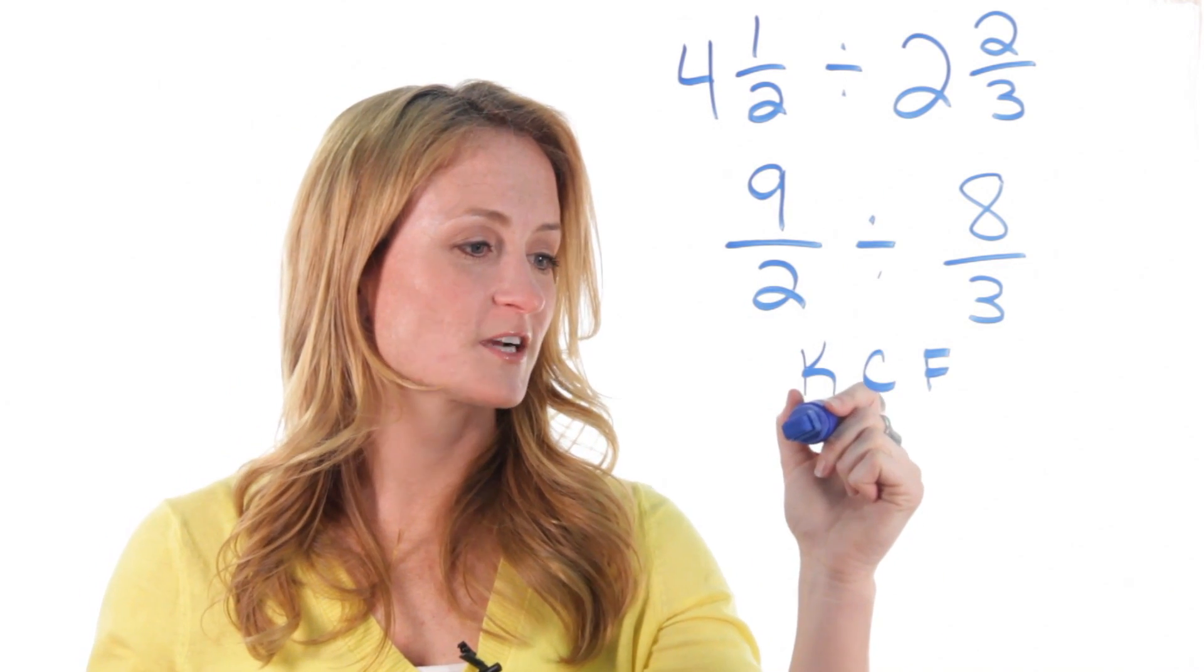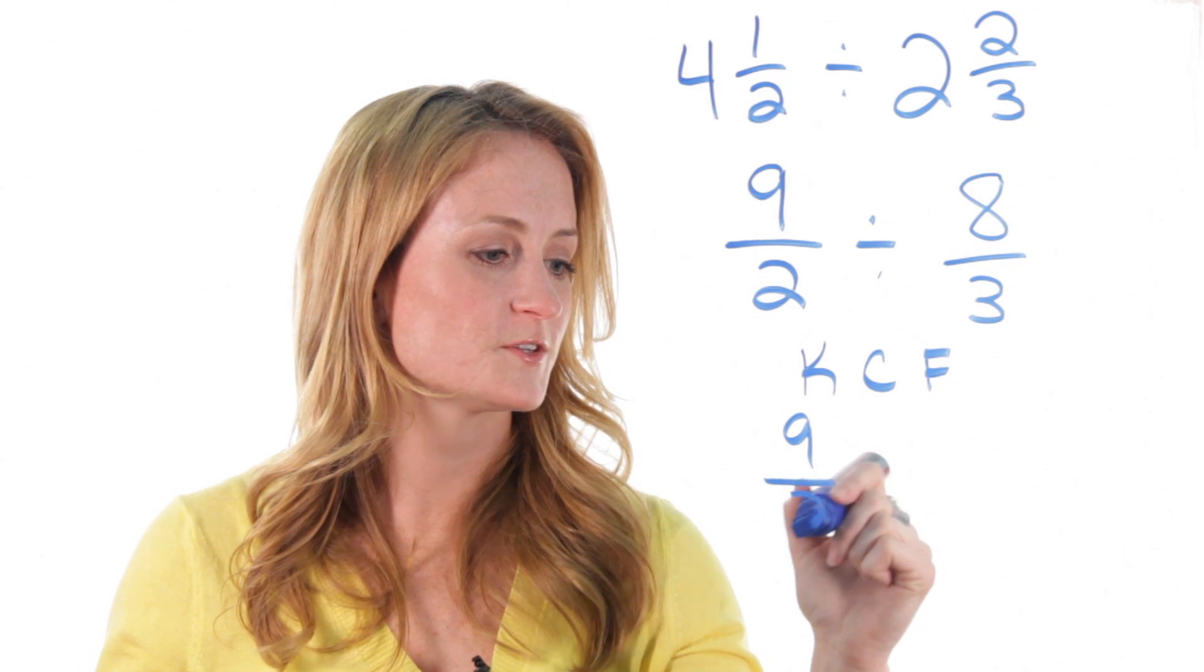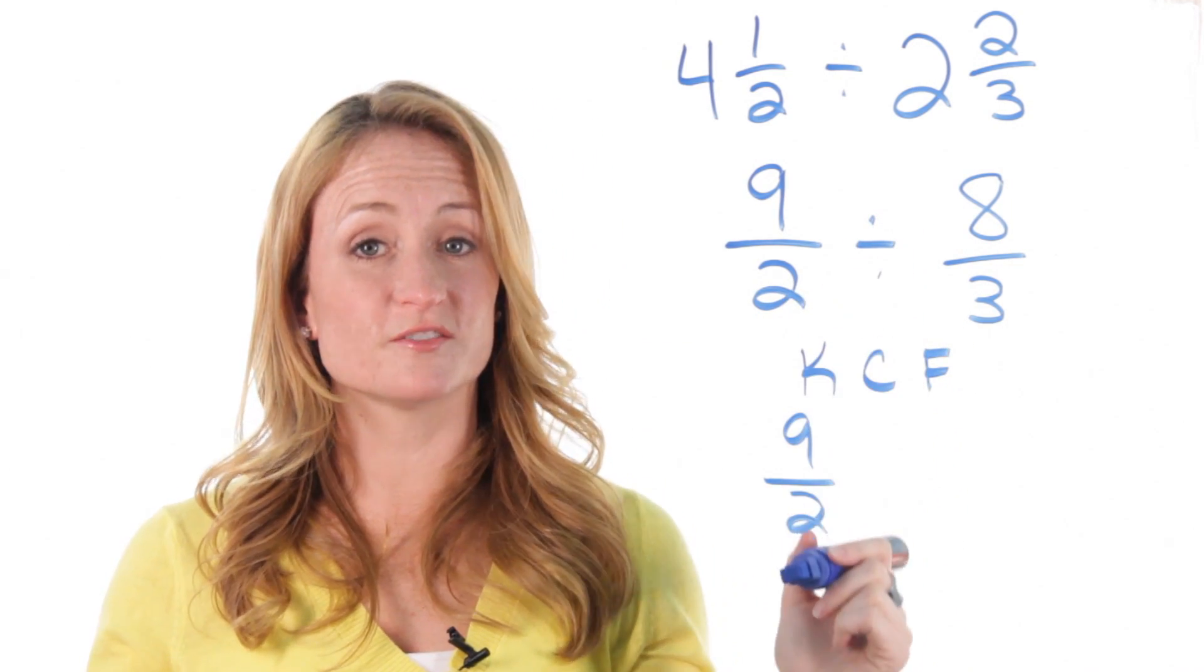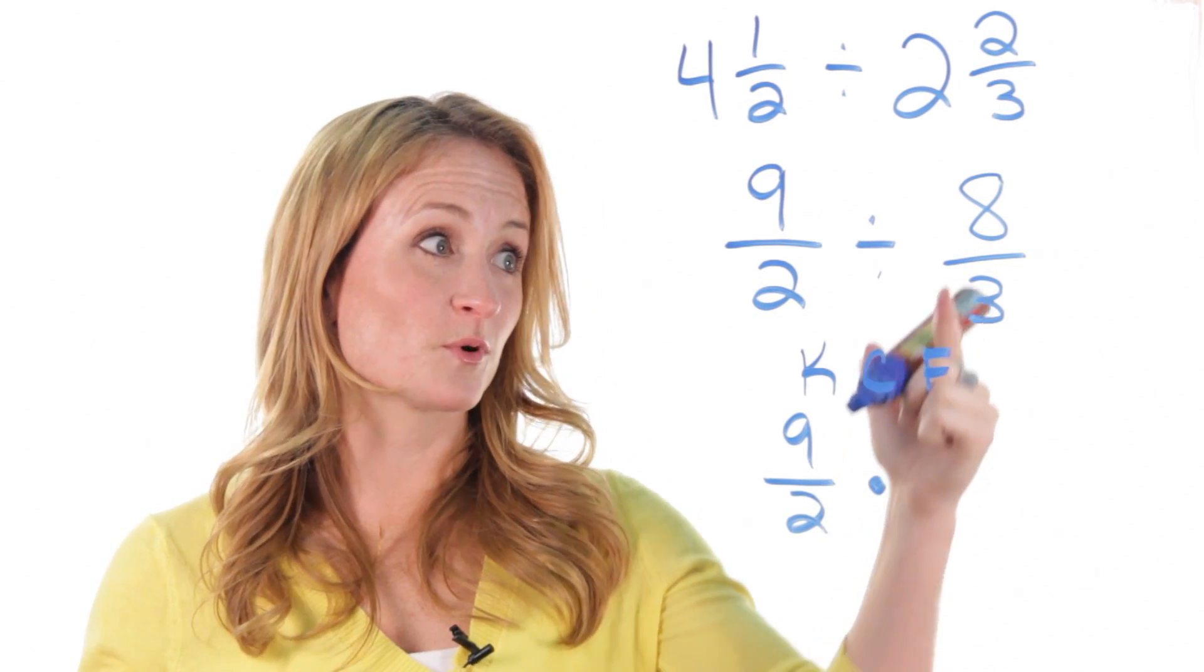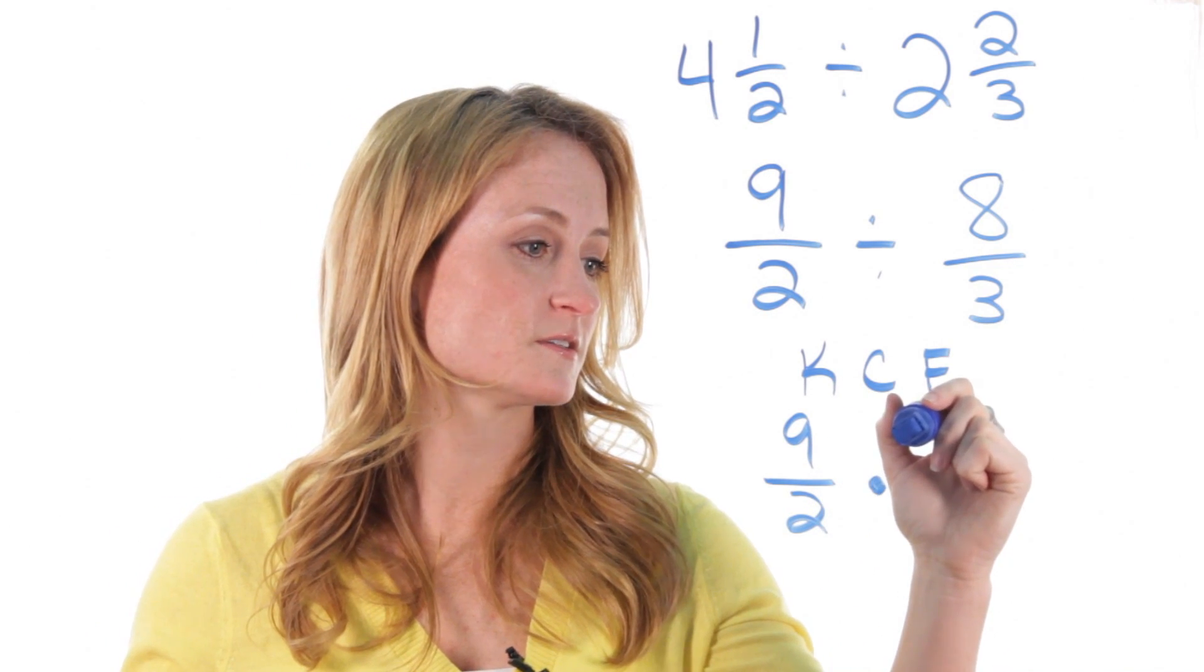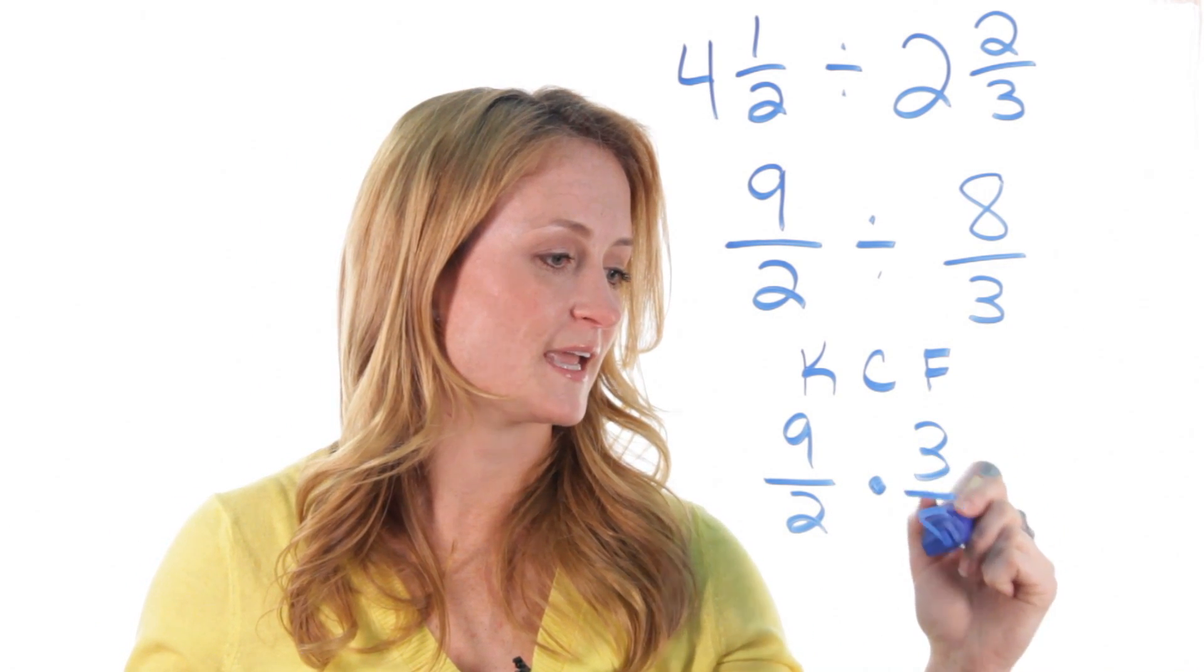So we're going to keep the first fraction as it is, 9 over 2. We're going to change our division sign into multiplication, and we're going to flip our last fraction. So it becomes times 3 over 8.